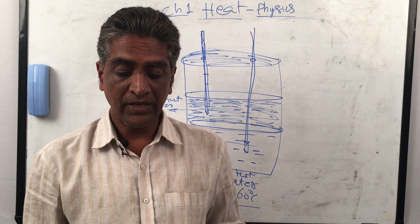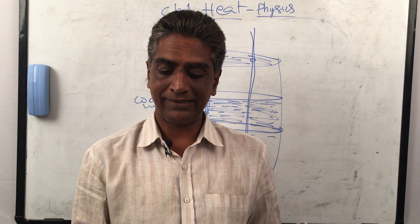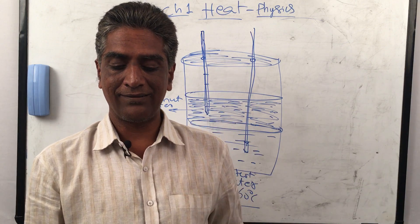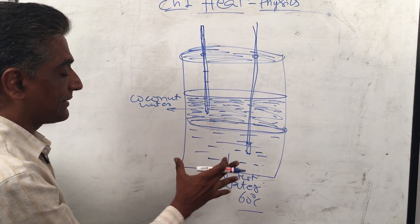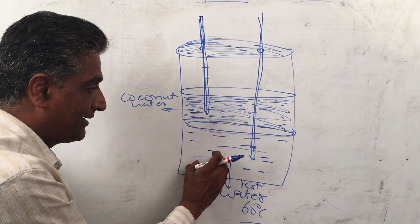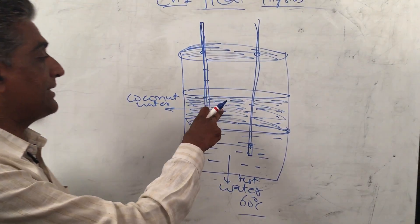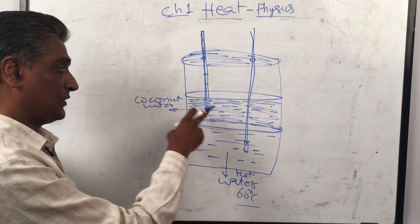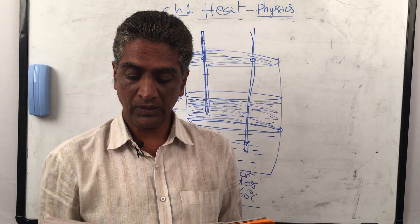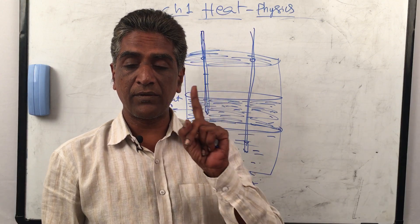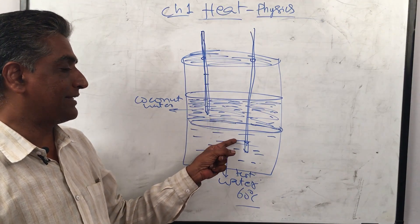Can you say that the water loses energy? From the above discussion it is clear that water loses energy while oil gains energy. Because of the temperature difference between the water and oil, heat energy flows from water to oil. This hot water is giving its energy to the coconut oil — that's the whole concept. As the coconut oil gains heat energy, its temperature increases, and the temperature of the hot water decreases.